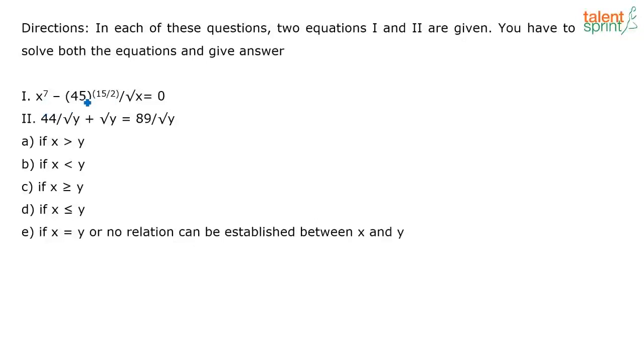So x to the power 7 minus 45 to the power—how do you solve this? See, you have x to the power 7, I am looking at the first equation, minus 45 to the power 15 by 2 divided by x to the power 1 by 2, that is equal to 0.